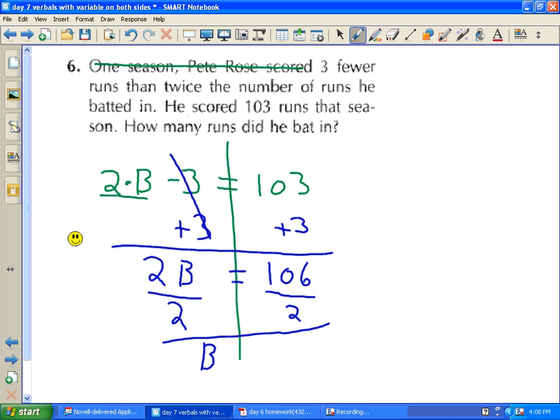And we get B equals, sorry, not 100, B equals 53. Let's check. He batted in not as many runs as he scored. One season, Pete Rose scored three fewer runs than twice the number of runs he batted in. So if we take twice the batted in and take three fewer than that, it should be the number of times he scored. And that is correct. The question makes sense.